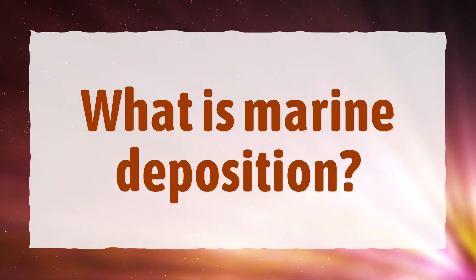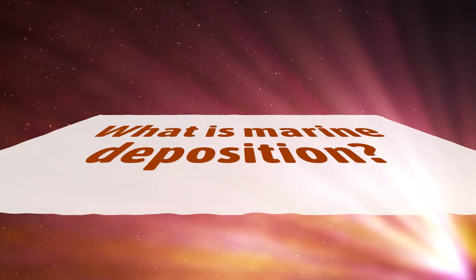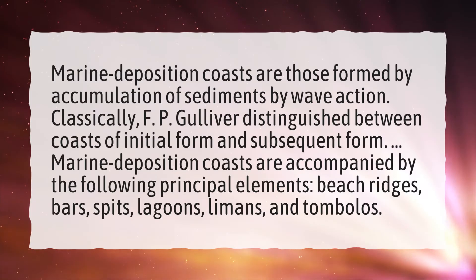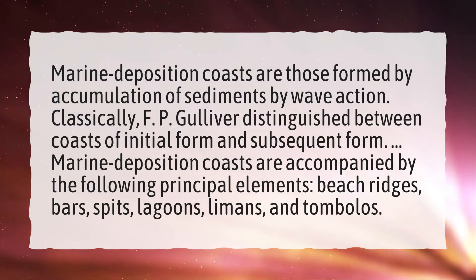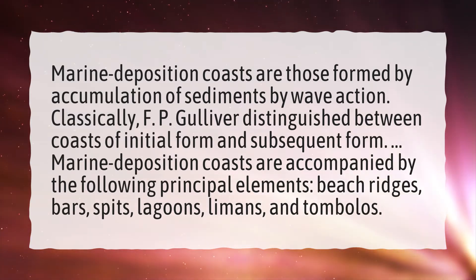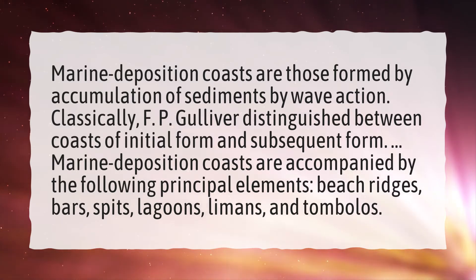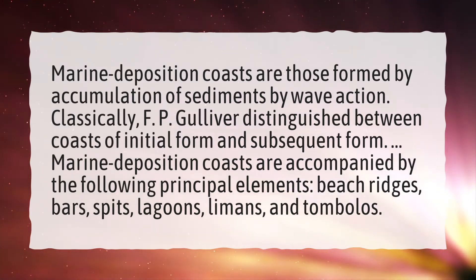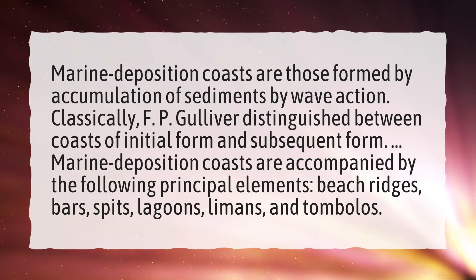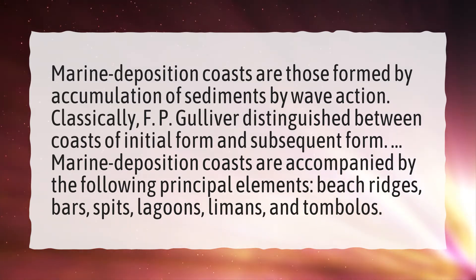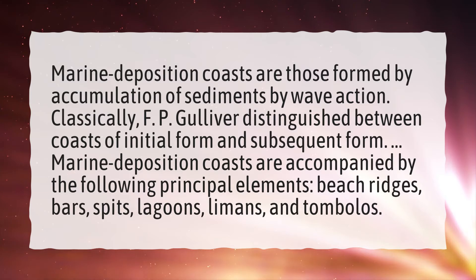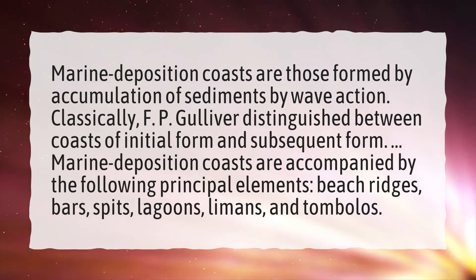What is marine deposition? Marine deposition coasts are those formed by accumulation of sediments by wave action. Classically, F.P. Gulliver distinguished between coasts of initial form and subsequent form. Marine deposition coasts are accompanied by the following principal elements: beach ridges, bars, spits, lagoons, lemans, and timbolos.